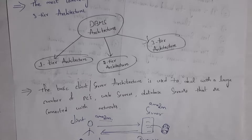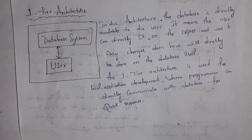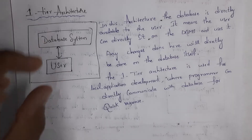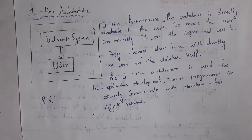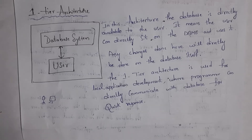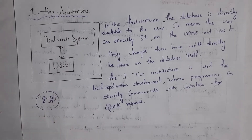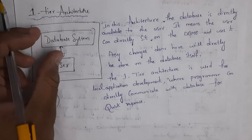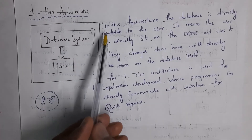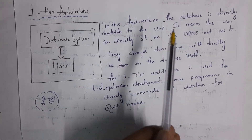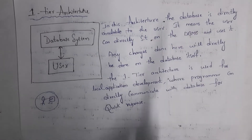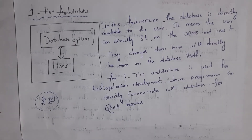First, I will explain one-tier architecture. In one-tier architecture, the database software is present in the user's computer itself. For example, in my college lab, I want to practice DBMS. I will open a DBMS software like MySQL, and inside MySQL I will create some tables. I am using DBMS software in my computer itself — that is a simple example of one-tier architecture. In this architecture, the database is directly available to the user, meaning the user can directly sit on the DBMS and use it. If I create a table, it is directly stored in the database, so any changes done here will be directly done on the database itself.